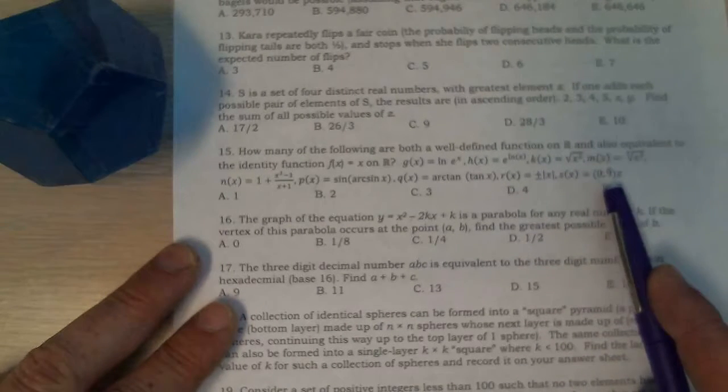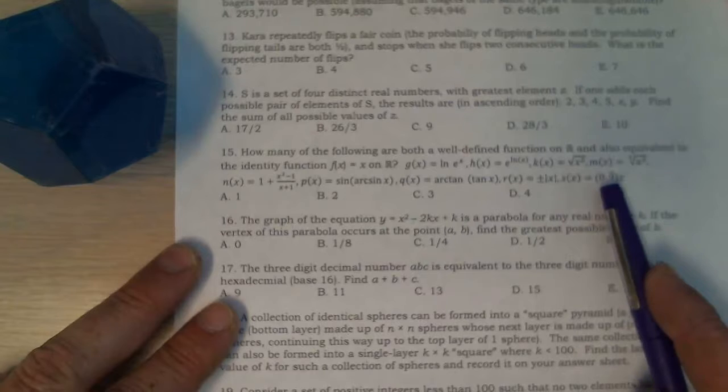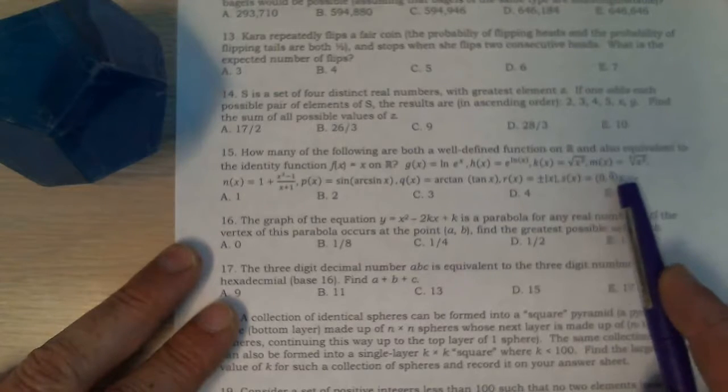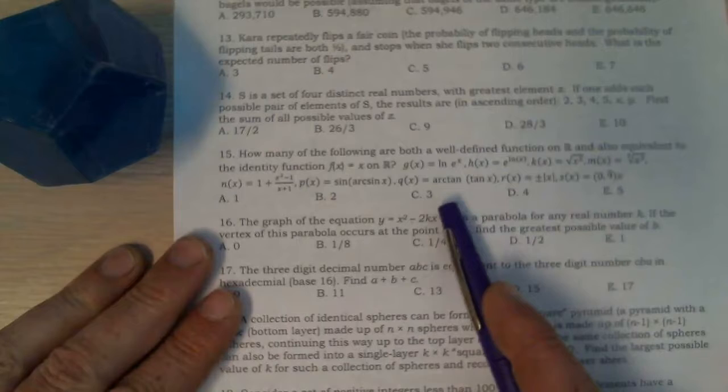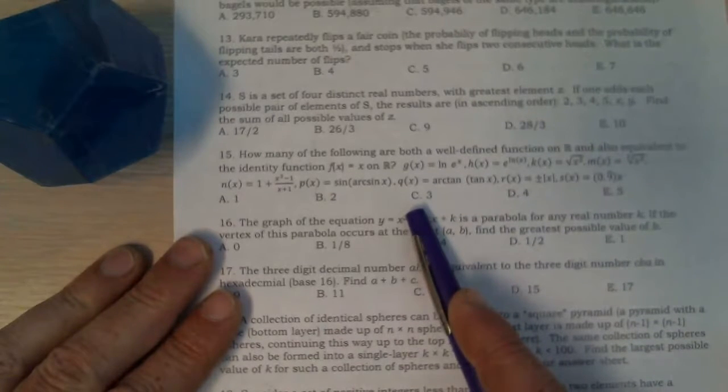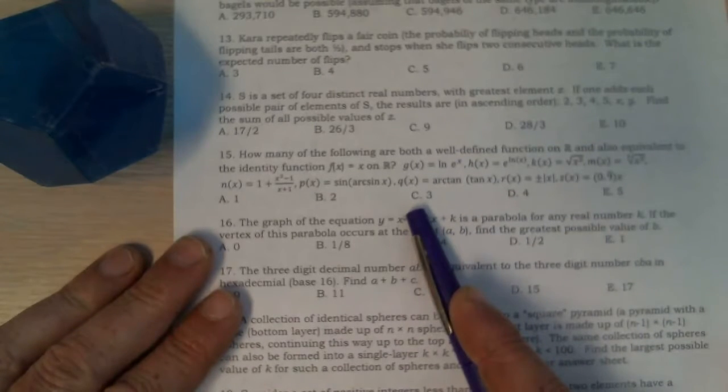And 0.9 repeating times x. Well, 0.9 repeating is 1, so 1 times x is x. Three. The correct answer to number 15 is C.